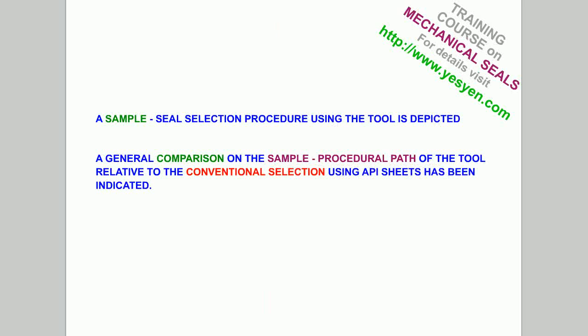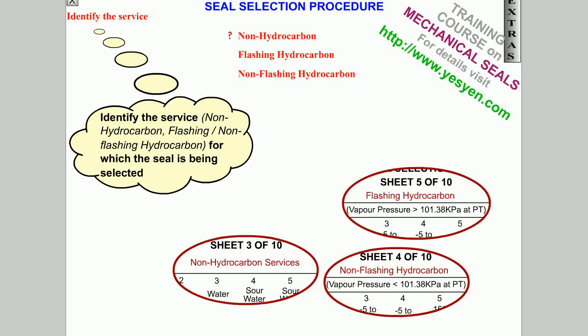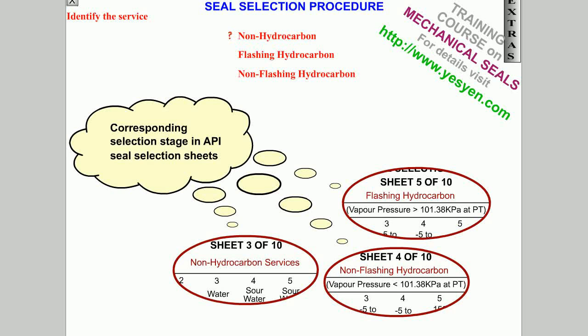A sample seal selection procedure using the tool is depicted. A general comparison of the sample procedural path of the tool relative to the conventional selection using API sheets has been indicated. Identify the service for which the seal is being selected. Corresponding selection stage in API seal selection sheets.